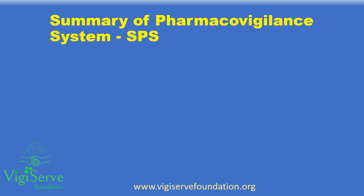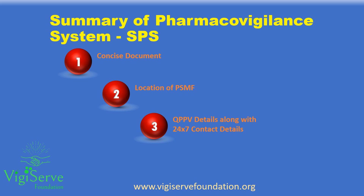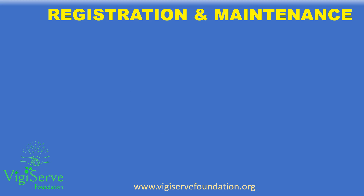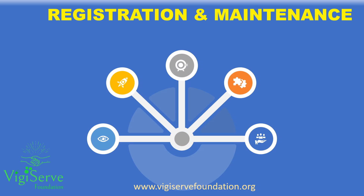The Summary of Pharmacovigilance System is a 2-3 page summary of the PSMF, specifying the location, details of the QPPV, and a declaration by the marketing authorization holder. It may be essential to register the PSMF in countries that mandate a PSMF requirement. This can be undertaken by submitting the SPS document or the entire PSMF.